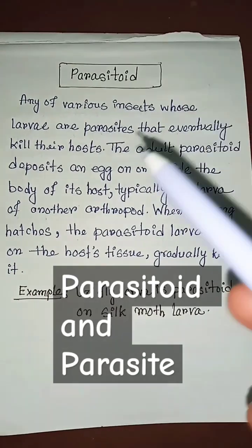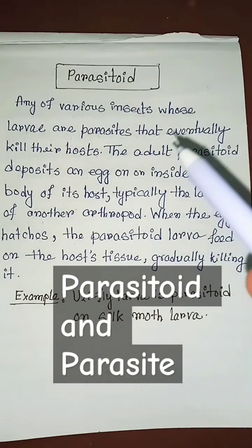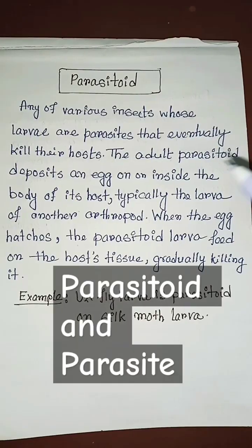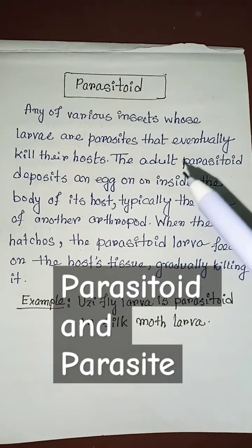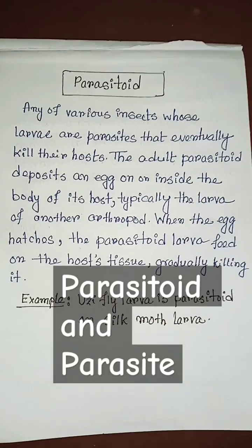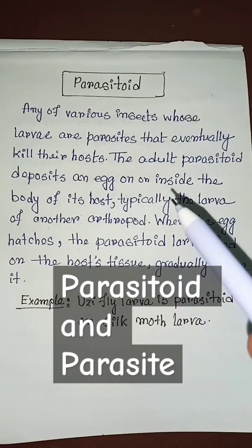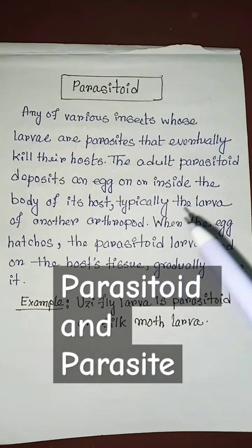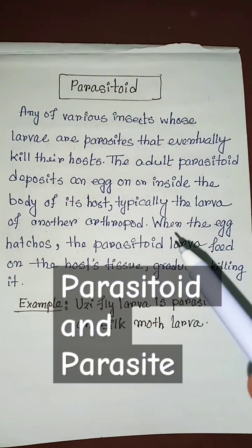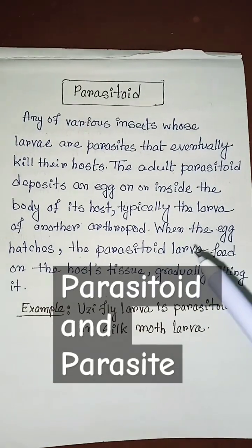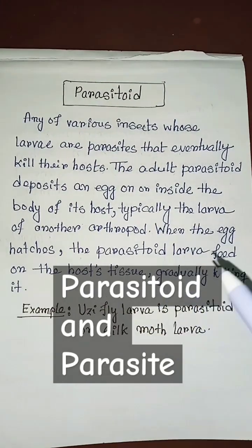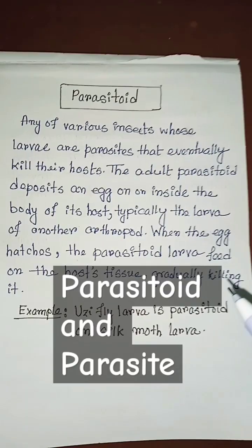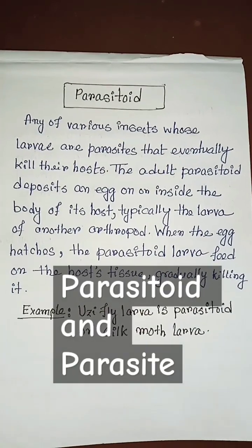What is Parasitoid? Any of various insects whose larvae are parasites that eventually kill their host. The adult parasitoid deposits an egg on or inside the body of its host, typically the larva of another arthropod. When the egg hatches, the parasitoid larvae feed on the host tissue, gradually killing it.